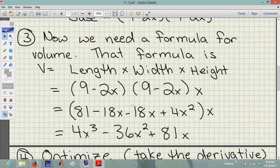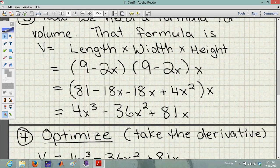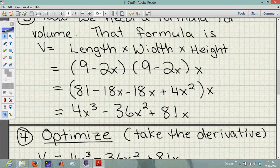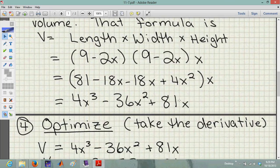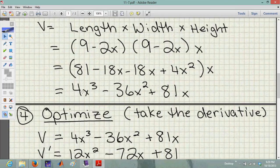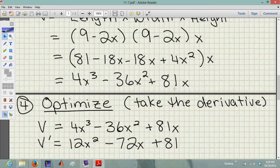And all I did here was multiply it out, I did the foiling, that gave me this here, and then I distributed the x here and just kind of changed the order around so that my highest power of x is at the beginning. 9 times 9, 9 times negative 2x, 9 times negative 2x, and then negative 2x times negative 2x. And I end up, once you've simplified it, with 4x cubed minus 36x squared plus 81x.